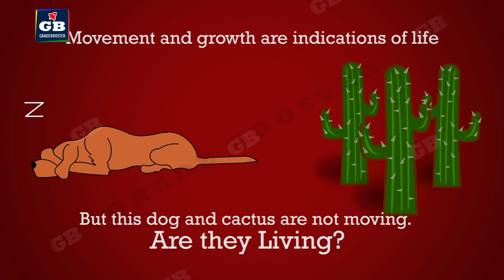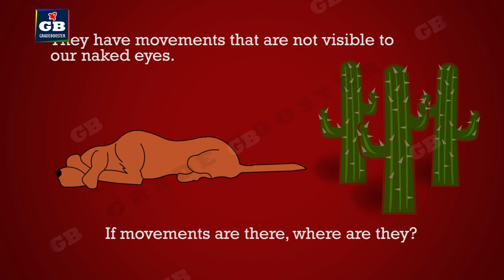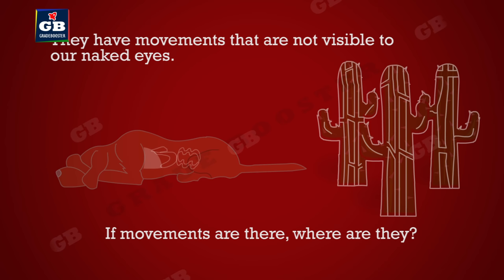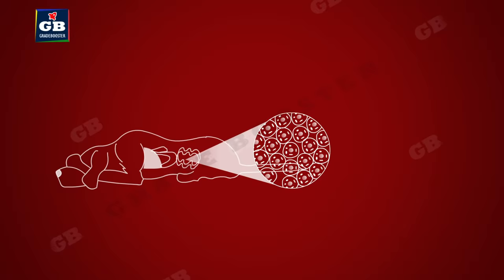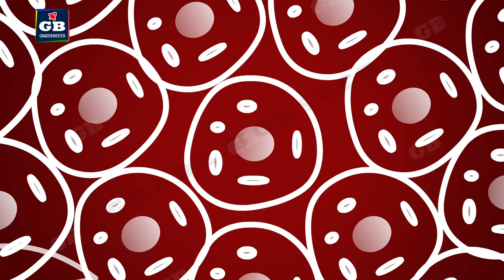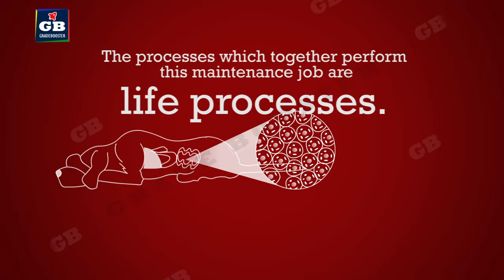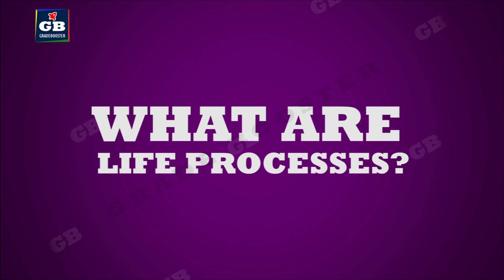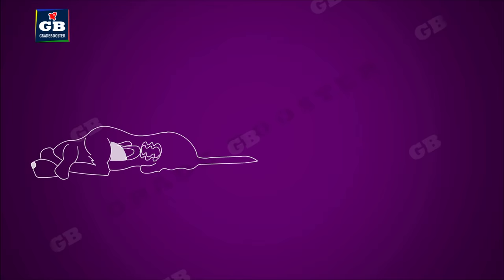Sometimes we find living things without any visible movement — examples include a sleeping dog and a cactus. At this instance we notice neither movement nor growth, but it doesn't mean they are not living. They have movements not visible to our naked eyes. Living things are made up of organs, tissues, and finally cells; cells are made up of molecules. In a living cell there is a continuous movement of molecules essential for repair and maintenance processes, which are called life processes.